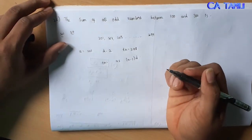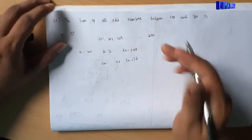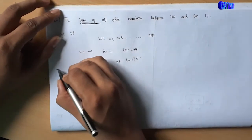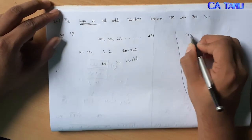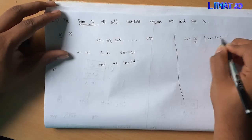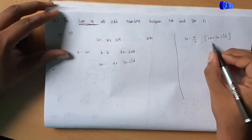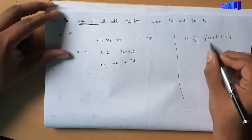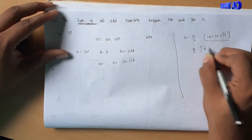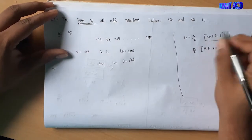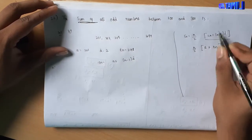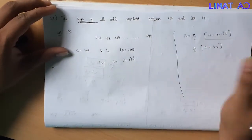Using the AP formula, tn equals a plus n minus 1 into d. We also have the sum formula Sn equals n by 2 into 2a plus n minus 1 into d. Substituting a plus n minus 1 into d, this simplifies to Sn equals n by 2 into a plus tn.